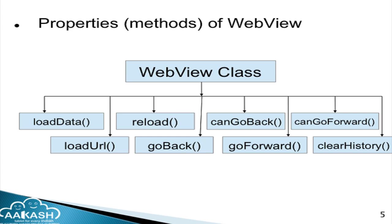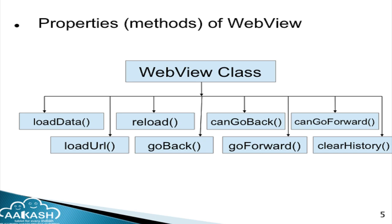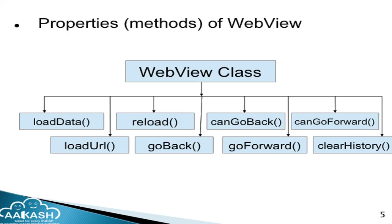The second property is loadUrl. If I want to load HTML pages from external resources, I use the loadUrl method. The loadUrl method takes only one argument - a string parameter which takes the URL, that is the path of the file which resides in external resources. It can also load a local file and runs that file in the WebView.